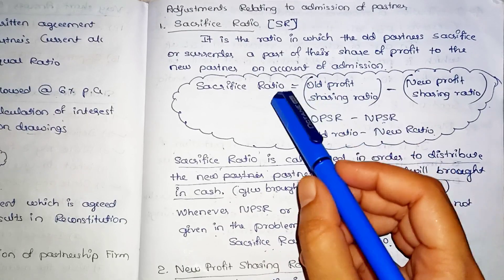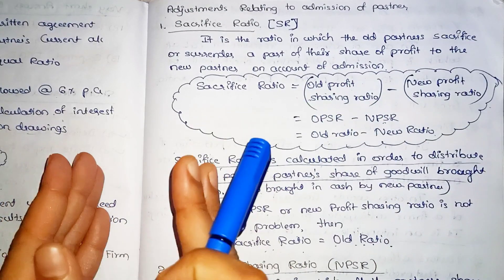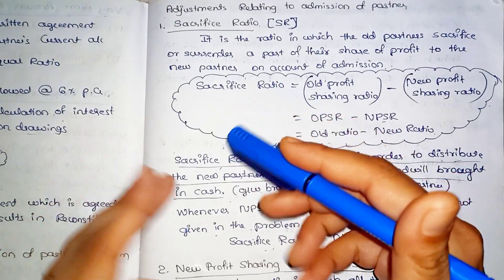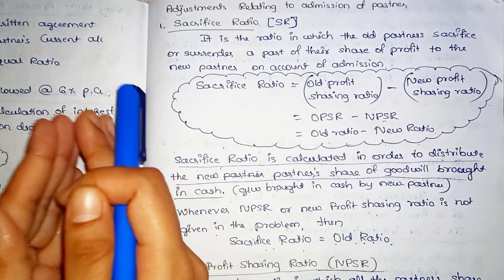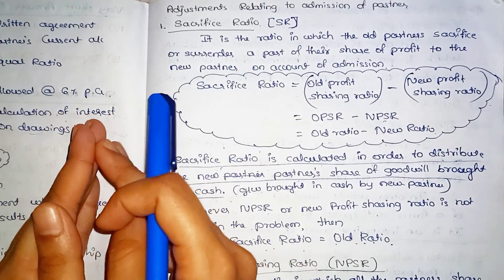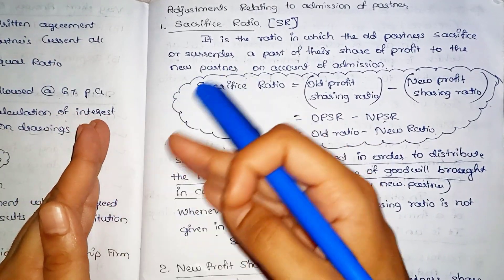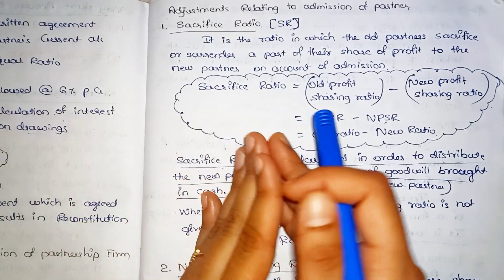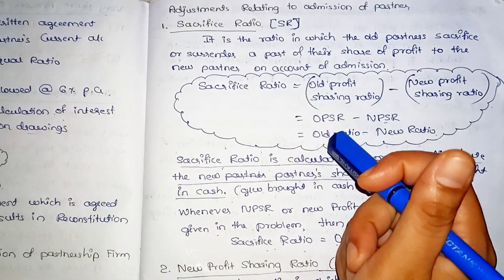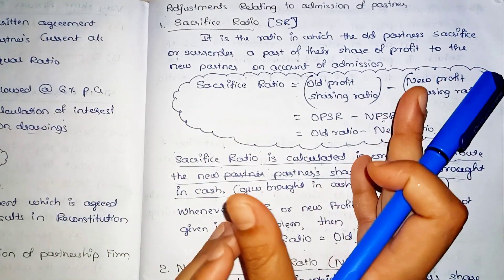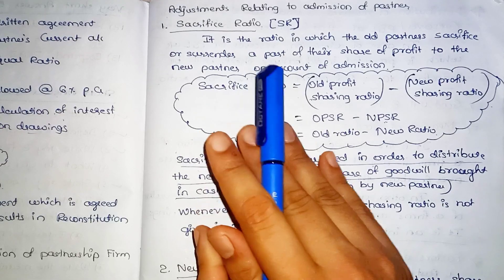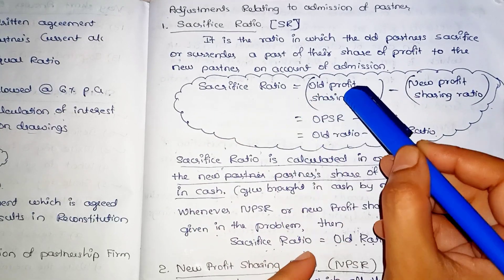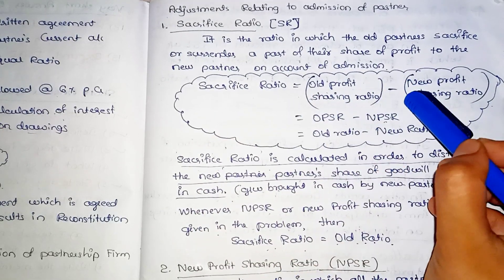The formula is very important and very easy. The old partners have an old share before admission and a new share after admission. Sacrifice Share is equal to Old Share minus New Share. If the old share equals the new share, the sacrifice is zero.